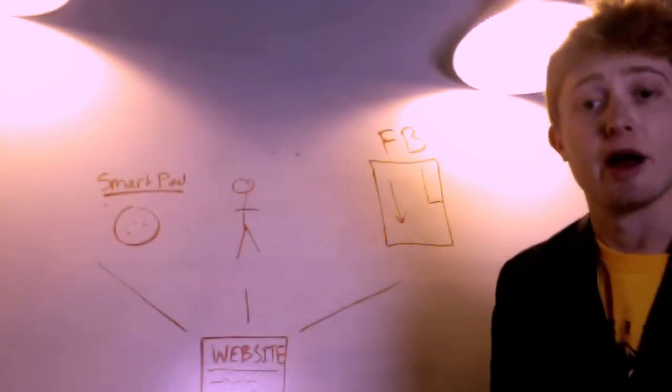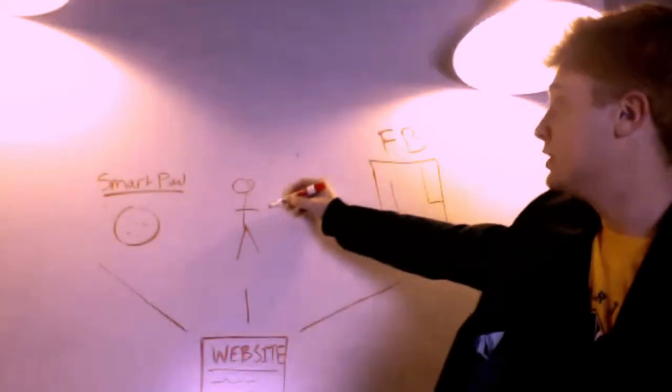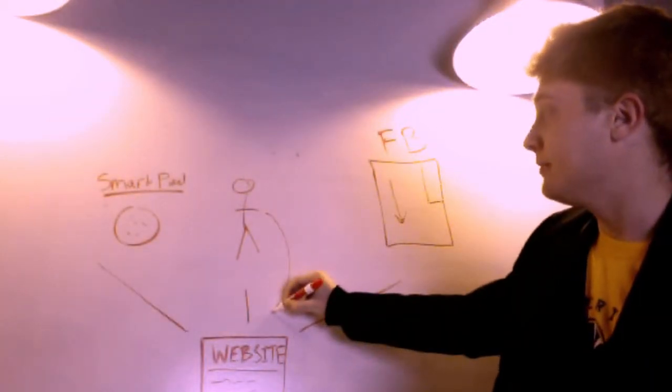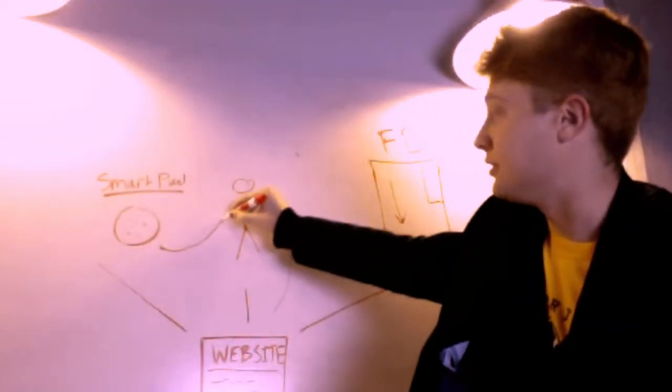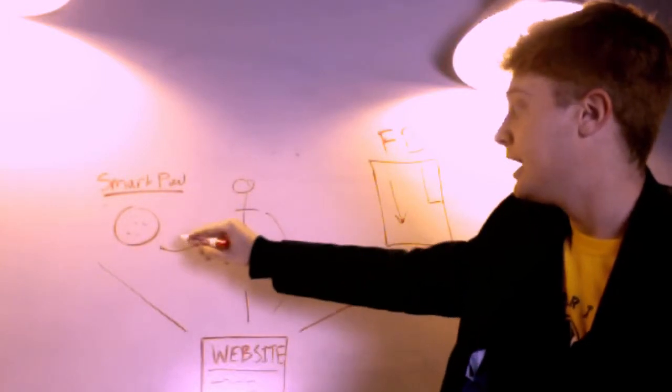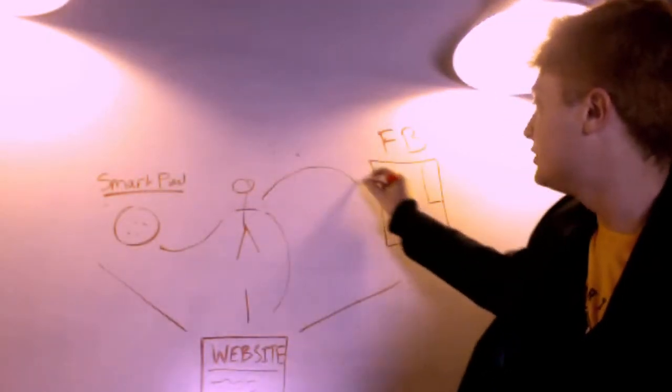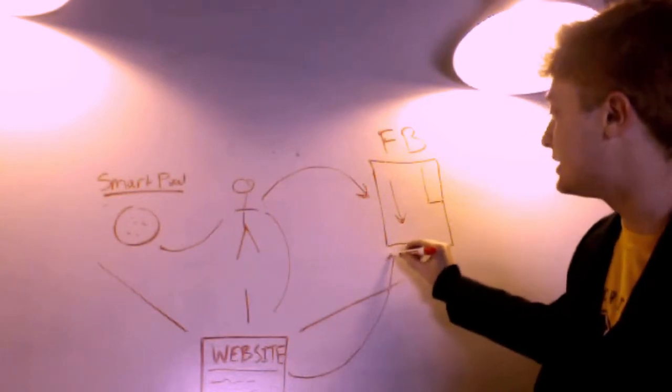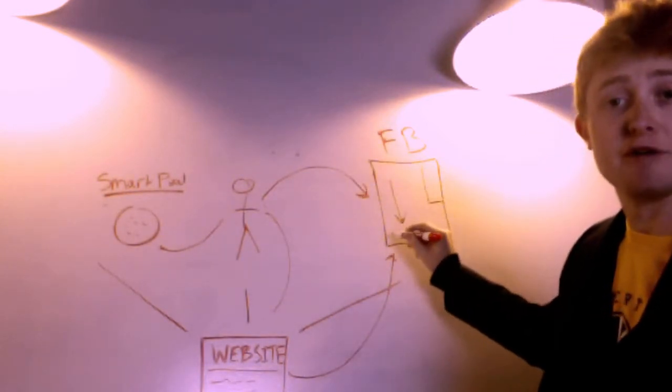So again, looking at the diagram, let's go over it. A person visits your website, they get pixeled by the cookie, and as they go back to Facebook, your website's advertisements will be shown in front of them.